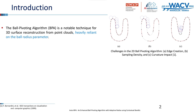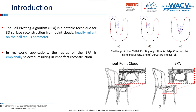Surface reconstruction from 3D point clouds is crucial in computer vision and computer graphics, involving the creation of watertight and manifold surfaces through the triangulation of provided point sets. In our paper, we focus on the Ball Pivoting Algorithm (BPA), which is a classic surface reconstruction method that generates a triangular mesh from point clouds. The BPA is sensitive to the selected ball radius: opting for a smaller radius can lead to more surface holes, while a larger radius might result in a loss of fine details.